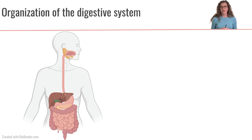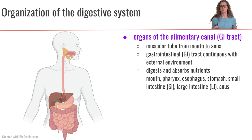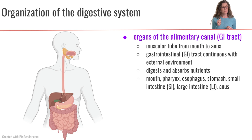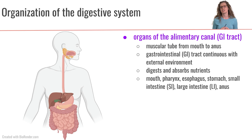Let's talk a little bit about the organization of the digestive system. First we have the organs of the alimentary canal, also referred to as the GI tract. Really, when we get simple about it, it's just a muscular tube that starts at the mouth and ends at the anus. This muscular tube is continuous with the external environment, so while we may think about our intestines being very much inside our viscera, actually the inside of our intestine is continuous with the external environment. The function of the GI tract is to digest and absorb our nutrients. The different components start in the mouth, go through the pharynx, then the esophagus, which attaches to the stomach — a storage pouch — then continues with the small intestine, then through the large intestine, out through the anus.